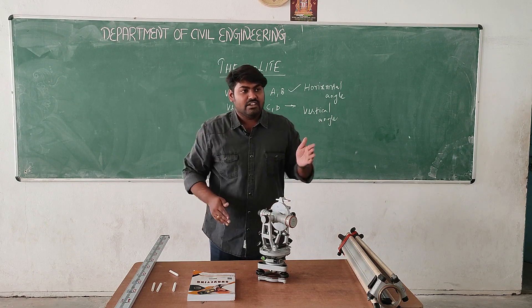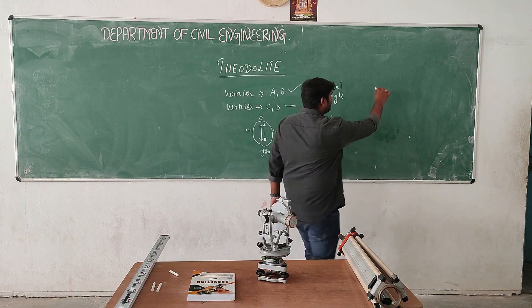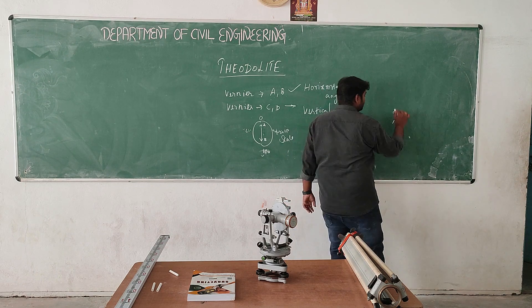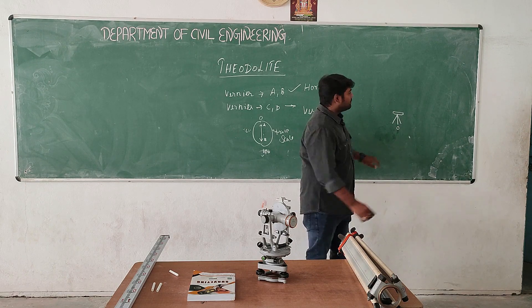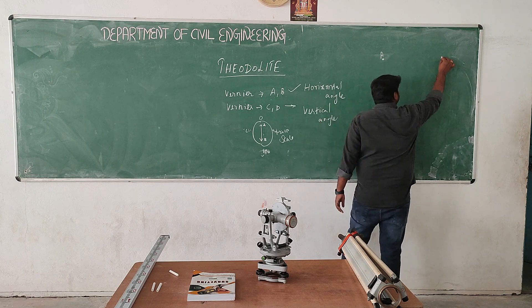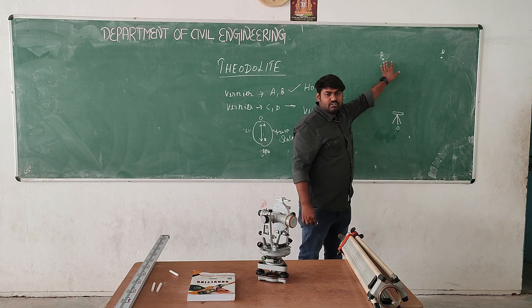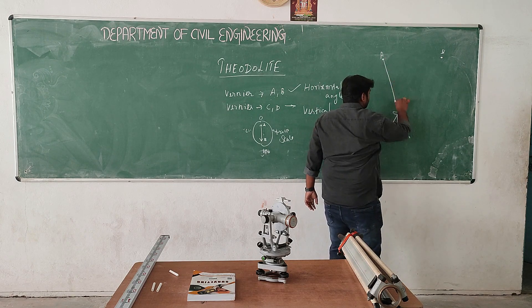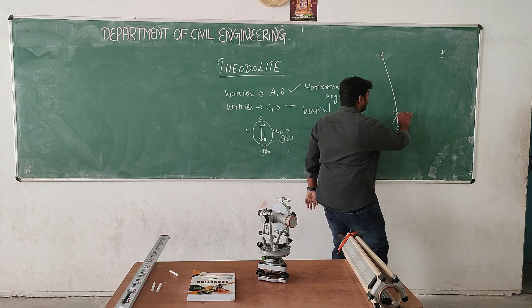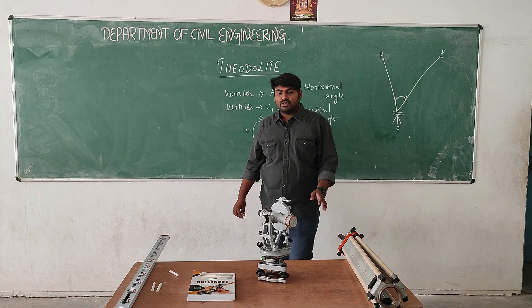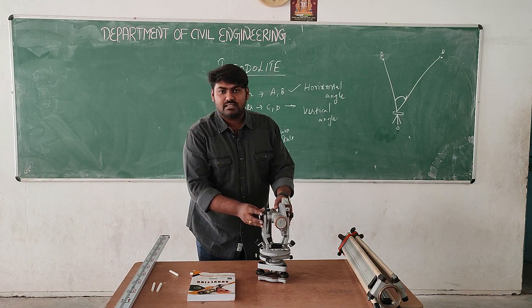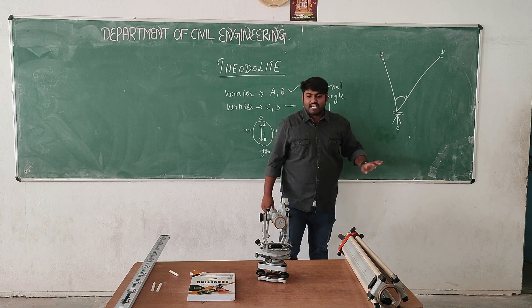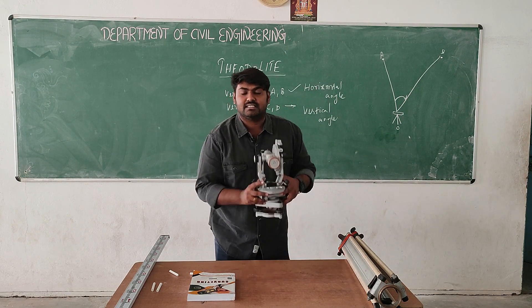For example, if we find out the horizontal angle, we have to focus the first object. We will fix the instrument at a point — consider this is the theodolite fixed here at point O. There is another object A and another object B, whether it should be a building or a tree — whatever object we have to focus. From object A to object B, we can find out the angle. With the help of the theodolite, we find out the horizontal angle from A to B. For this, we have to consider the preliminary adjustments before fixing the theodolite.